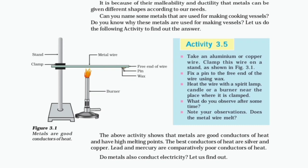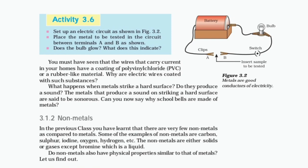Lead and mercury are comparatively poor conductors of heat. Do metals also conduct electricity? Activity 3.6: Set up an electric circuit as shown in figure 3.2. Place the metal to be tested in the circuit between terminals A and B. Does the bulb glow? You must have seen that the wires carrying current in your homes have a coating of PVC or a rubber-like material. Why are electric wires coated with such substances? The metals that produce a sound on striking a hard surface are said to be sonorous. Can you now say why school bells are made of metals?